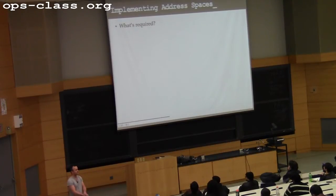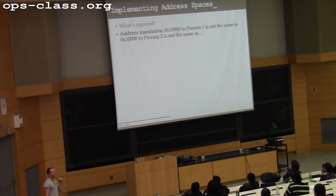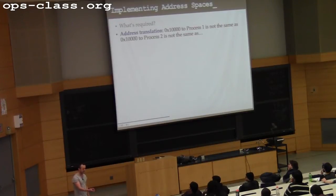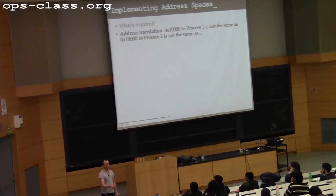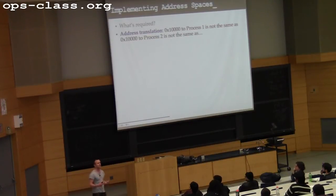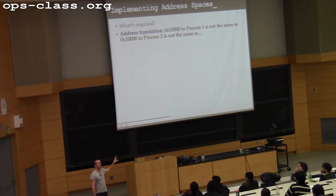Essentially, address translation. Once you have this address space idea, it's clear that addresses have somehow lost a property they used to have. It used to be that if I had an address, I knew exactly what byte of memory it pointed to, and it was unique — I would never have two addresses that were the same pointing to different bytes of memory. Now, clearly this is the case because after fork, the child has all the same addresses in its address space that the parent does, but the child has to have its own private memory.